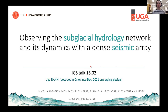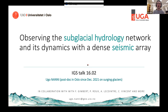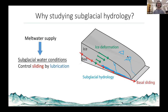Thank you, and I'm very pleased to meet you tonight. I thank the IGS committee for giving me the opportunity to present my work. Today I will present work on investigating subglacial hydrologic dynamics using a dense seismic array. The aim is to investigate subglacial hydrologic conditions. When we have meltwater production from surface melt or precipitation, such water can penetrate to the base of the glacier at the subglacial environment. There, subglacial water conditions can control sliding by lubrication, which is a very important component of glacier dynamics. Therefore, studying glacier hydrology can help better understand glacier dynamics.